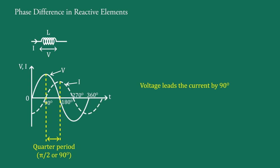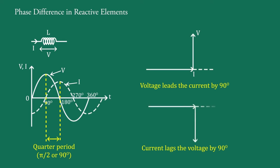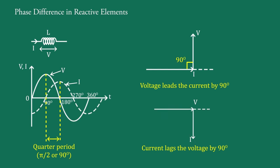In other words, we can say that the current lags behind the applied voltage by 90 degrees. Hence, if we draw the phasor diagram for the voltage and current through the inductance, it looks like this — here voltage leads the current by 90 degrees, or equivalently, current lags behind the voltage by 90 degrees.